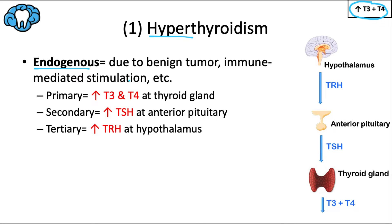Just like with the adrenal video, there are three possibilities: primary hyperthyroidism, where the thyroid gland itself is producing too much thyroid hormone directly; secondary hyperthyroidism, where the pituitary gland is producing too much TSH, which overstimulates the thyroid gland; and tertiary hyperthyroidism, where the hypothalamus produces too much TRH, which causes too much TSH, which in turn causes too much T3 and T4.